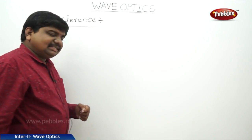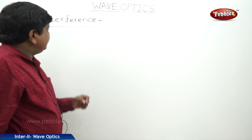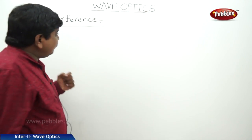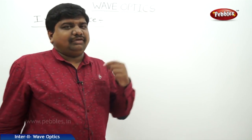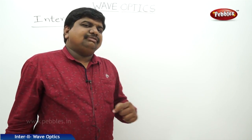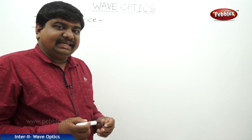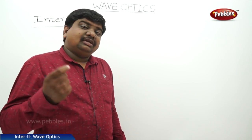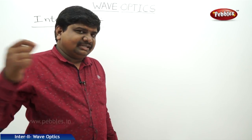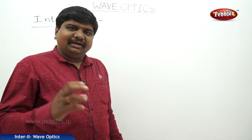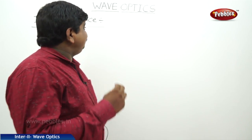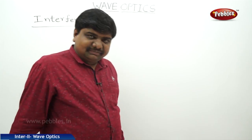The next concept we are discussing is interference, also called interference of light. This concept was discovered by Isaac Newton. We can experience the interference pattern of light in Newton's rings interference experiment. According to the scope and view of the experiment, the interference definition can be given as follows.